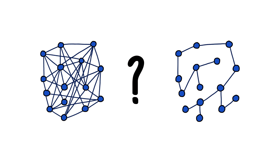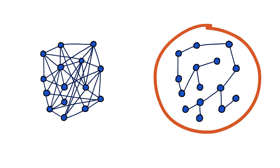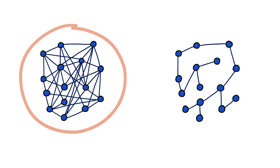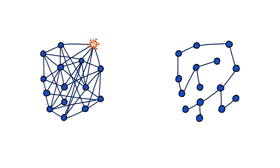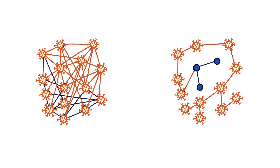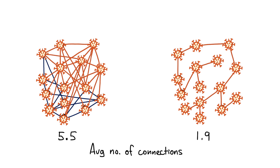Most of you hopefully chose the less connected one. Both networks have 15 nodes, but the more connected one has far more connections. If one node gets infected there, it takes just two steps before the entire network is infected, while in the sparser network it takes six. By lowering the average number of connections in the network, we can slow down a virus.